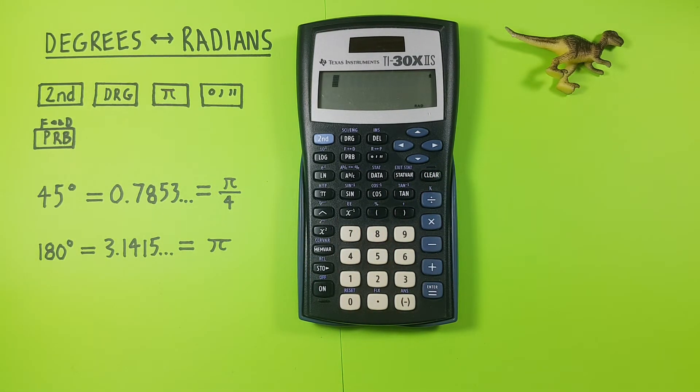What if we want to take it the other way? Let's say we are given radians and want to get this into degrees. For example if we had pi over 4, well first thing we want to do again is tell our calculator what we want our results in.